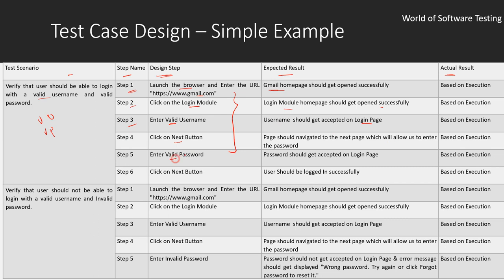Step 5 is to enter the valid password; the password should get accepted on the login page. Step 6 is to click the next button; the user should be logged in successfully. These are the steps for this particular scenario, and the actual result will be obtained during actual execution.